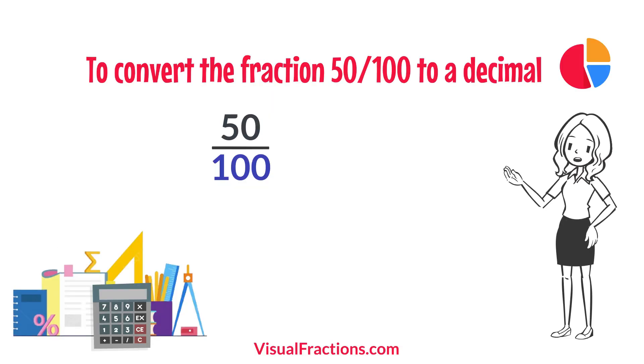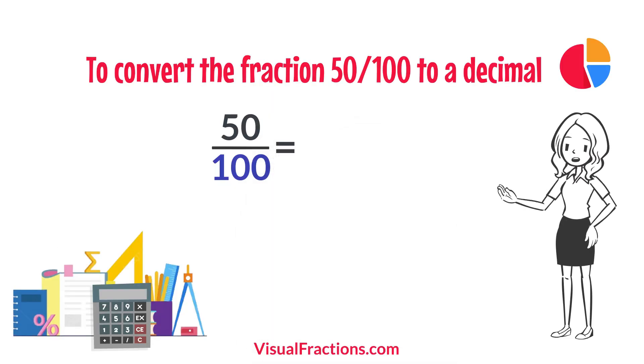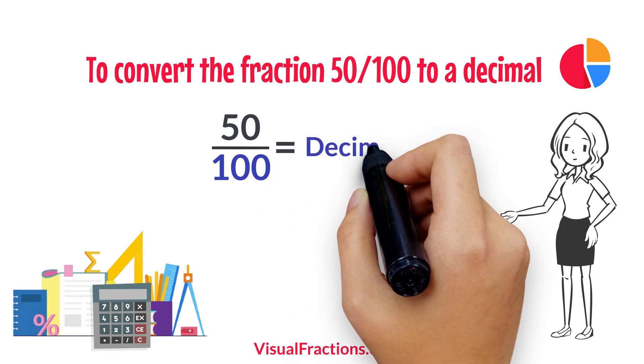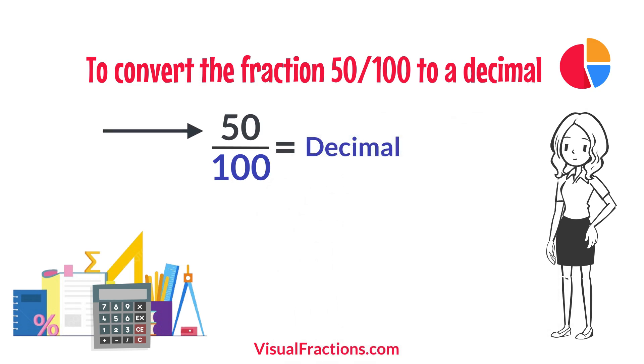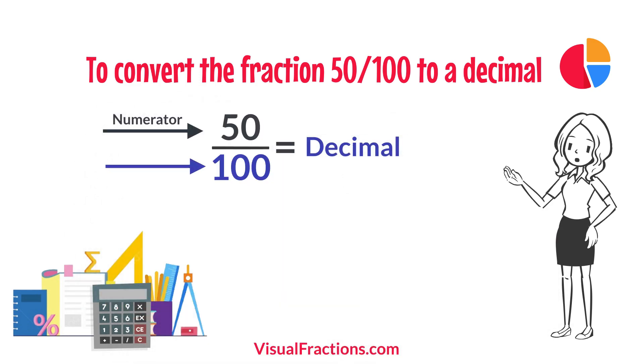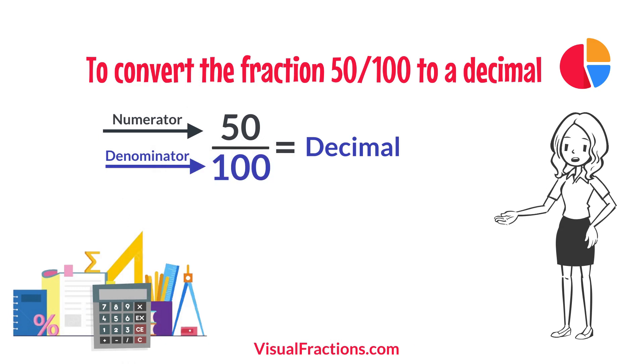To convert the fraction 50 one hundredths to a decimal, all we need to do is divide the numerator, the top number, by the denominator, the bottom number.